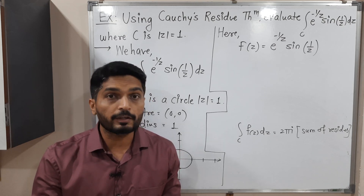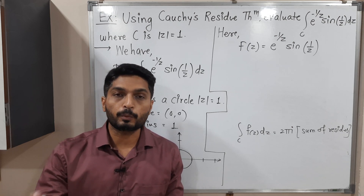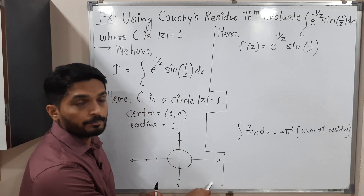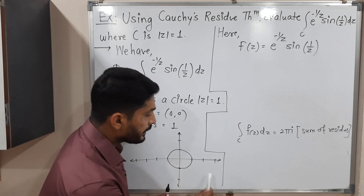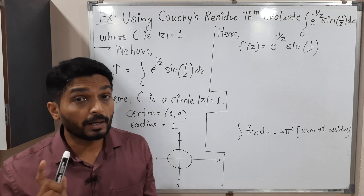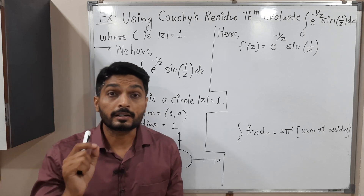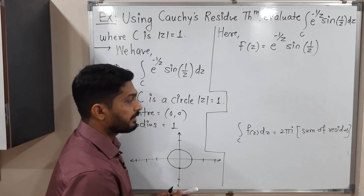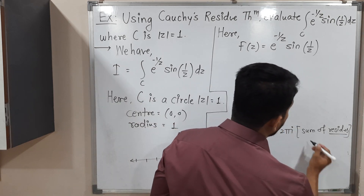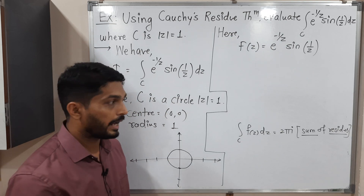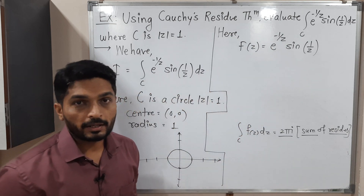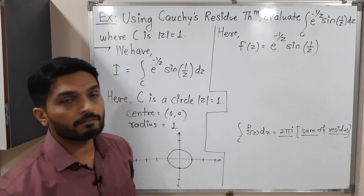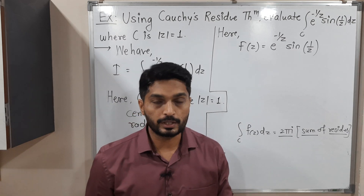What we do is: first we find the singular points of the function — points where the function is not analytic, generally where the denominator is zero. We check whether those points lie outside or inside the circle. If they lie outside, no need to find any residue. If a point lies inside the circle, we find the residue at that point. We sum all residues, multiply by 2πi, and that product gives the required value of the integration.